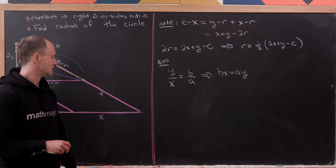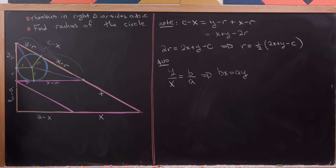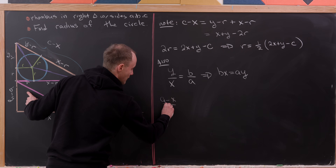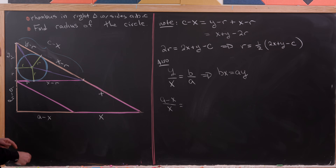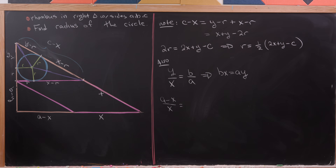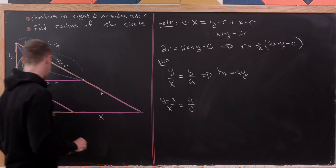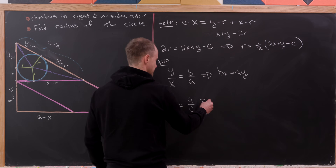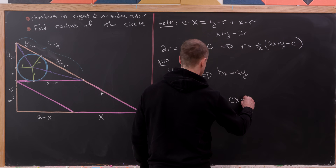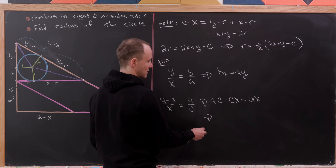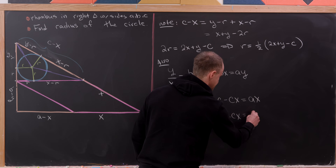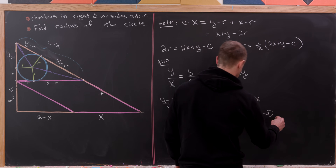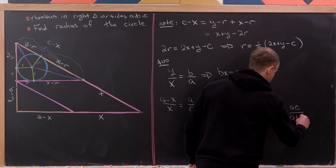We apply similar triangles again using the hypotenuse. The ratio (A minus X) over X equals A over C, using the base and hypotenuse of the lower-left triangle versus the whole triangle. Cross-multiplying: AC minus CX equals AX, so AC equals AX plus CX equals X times (A plus C), giving X equals AC over (A plus C).